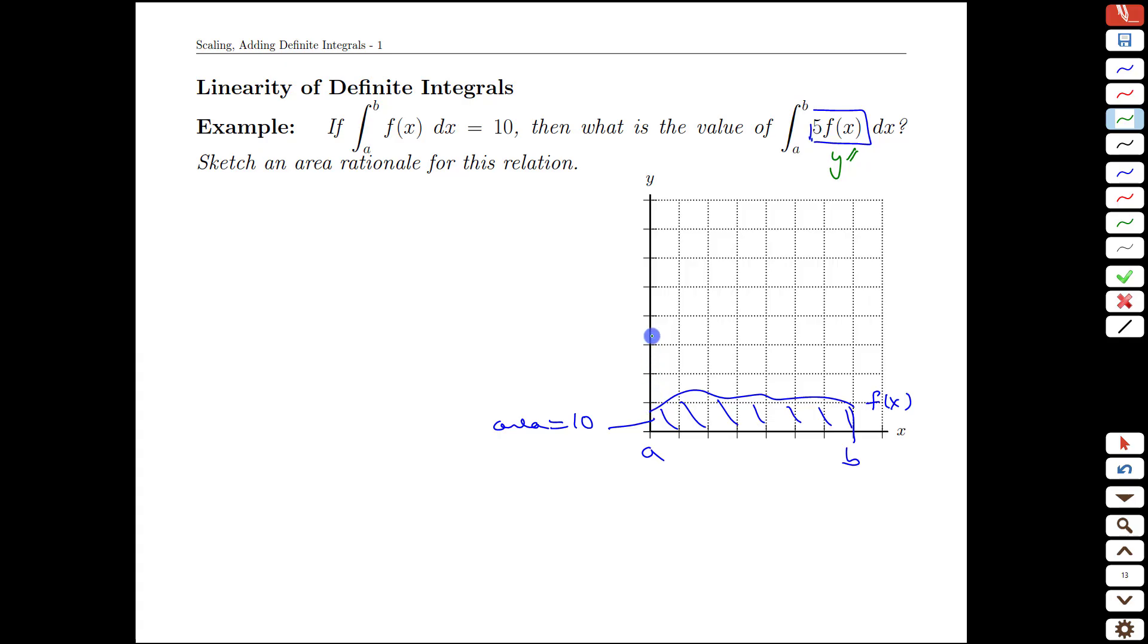So we went 1, 2, 3, 4, 5. We could resketch this graph as scaled 5 times in height what the original function was.